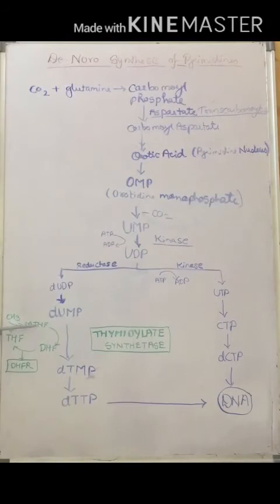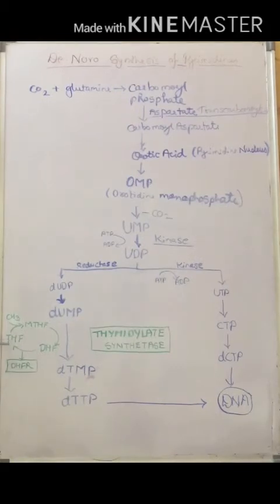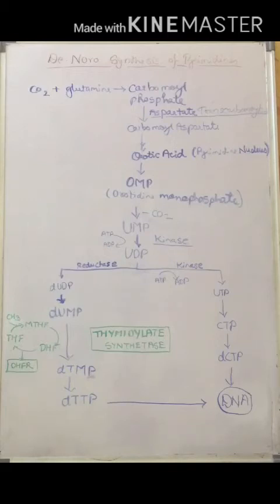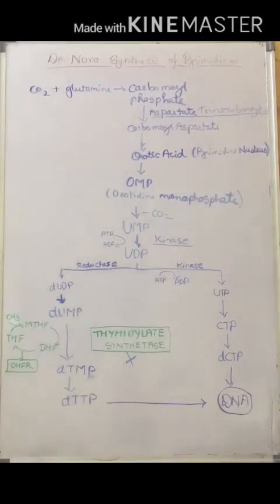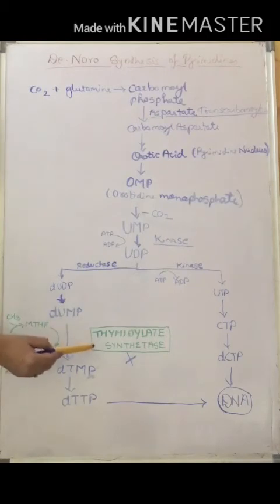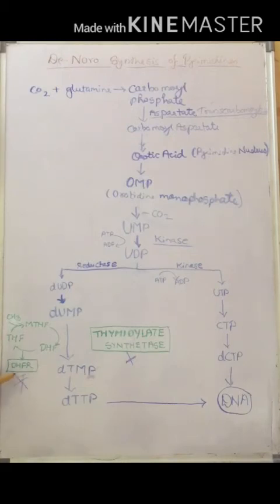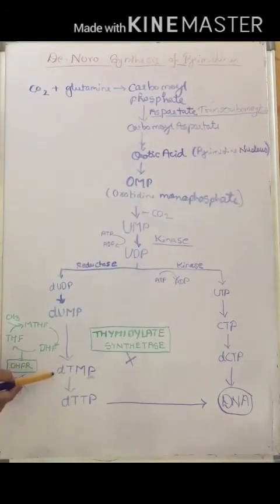During this reaction, methylene tetrahydrofolate is converted to dihydrofolate, which is reduced back by the enzyme dihydrofolate reductase to tetrahydrofolate, and with the addition of a methylene group it returns to the active cofactor form. Anti-metabolite drugs inhibit thymidylate synthetase — for example, fluorouracil — and folate antagonists inhibit dihydrofolate reductase. As a result, DTMP is not formed, DNA is not synthesized, and the cell dies.